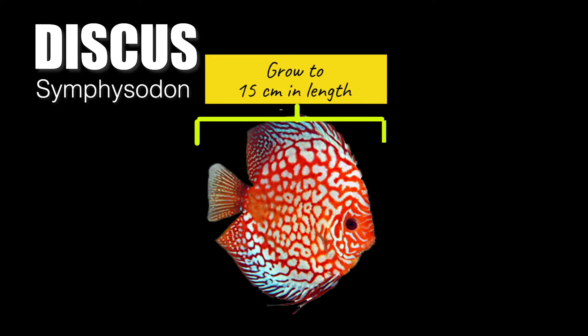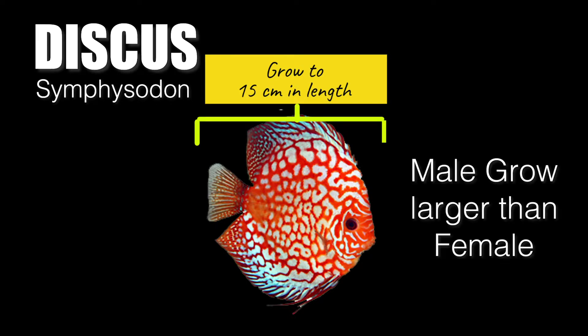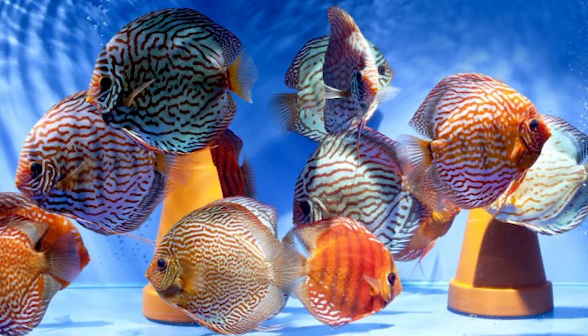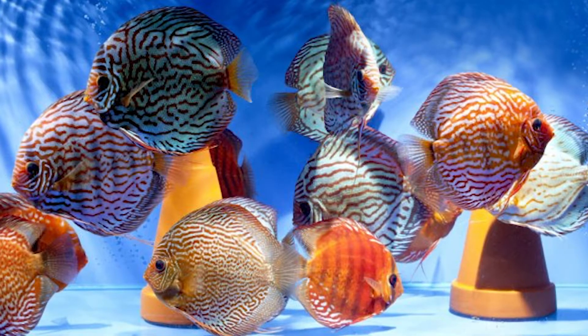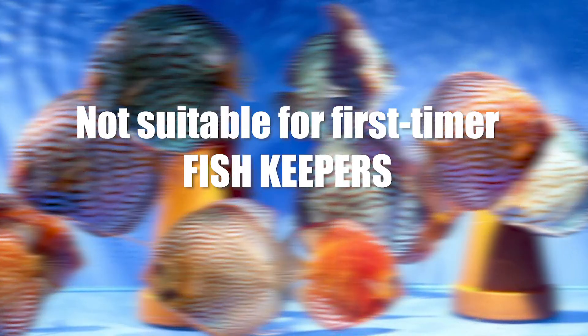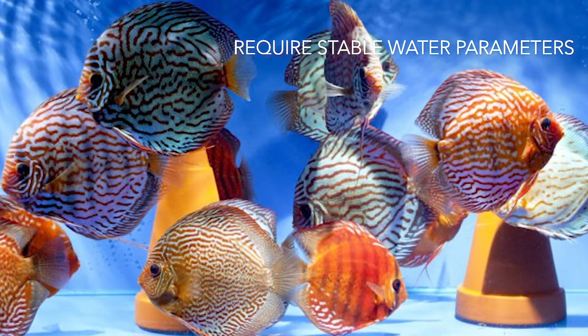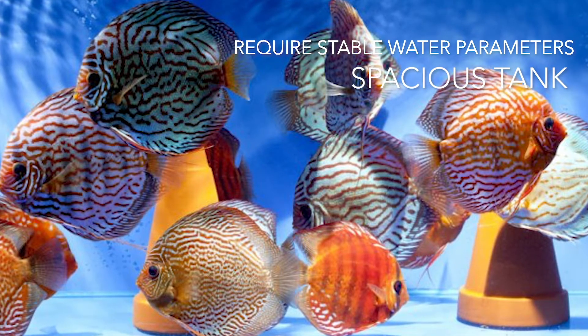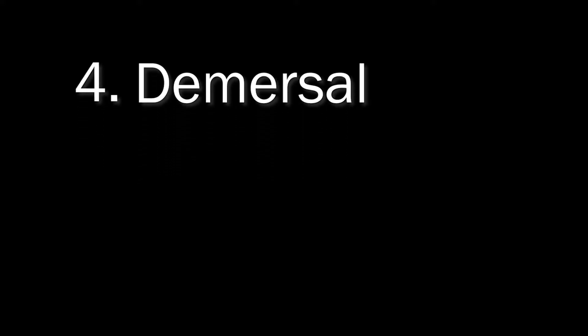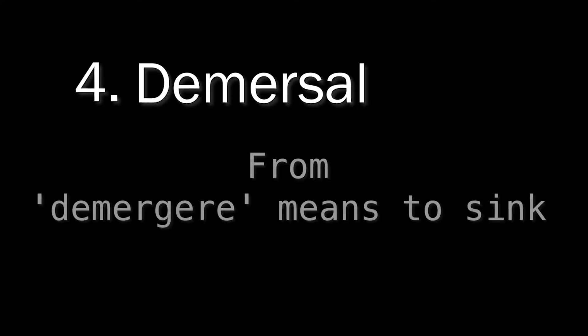Discus can grow up to 15 centimeters in length, with males growing larger than females. Although this herbivorous fish can coexist with other fish, they are not suitable for first-time fish keepers. They require stable water parameters, species tanks, and high-quality food.